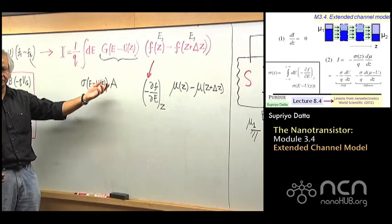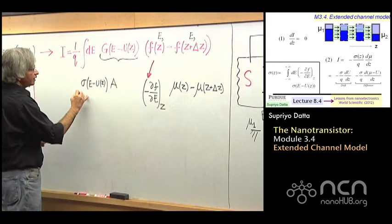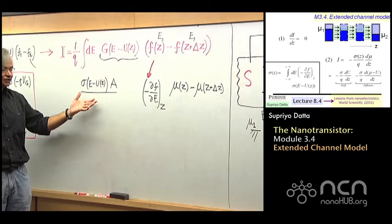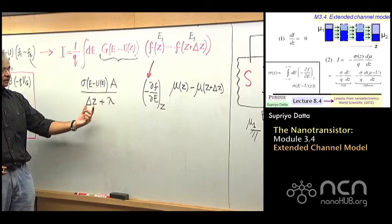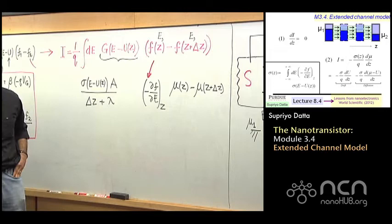Now divided by the length — but one of the things we have seen is that in this new Ohm's law, it's not just proportional to length. It's actually like delta Z plus the mean free path. So delta Z is the length of the section plus mean free path.